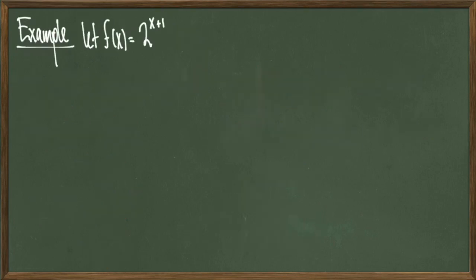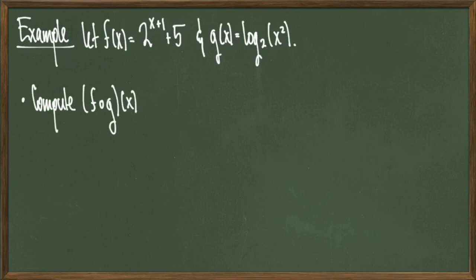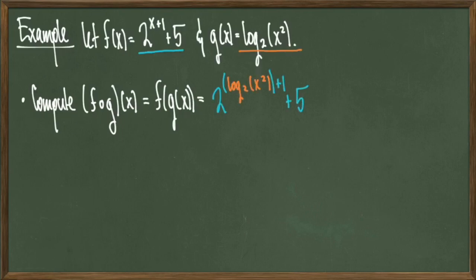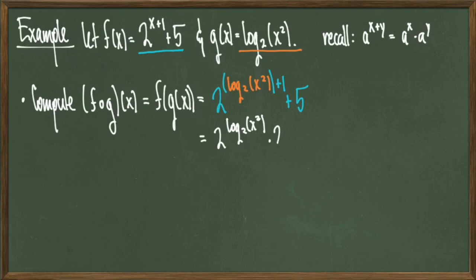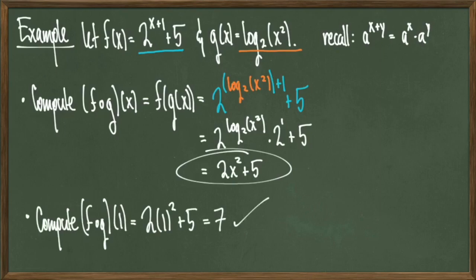For our next example, let f of x equal 2 to the x plus 1 plus 5, and let g of x equal log base 2 of x squared. We're going to compute the composition f composed with g of x, which by definition is f of g of x. Making these substitutions, I get 2 raised to the power log base 2 of x squared plus 1, all plus 5. Recalling that a to the x plus y expands into a to the x times a to the y, the sum in the exponent splits into 2 raised to log base 2 of x squared times 2 to the 1, all plus 5. The inverse rule applies, and this simplifies to 2 times x squared plus 5. I can also evaluate the composition at a number, so f composed with g of 1 simplifies down to 7, and we're done. Thank you so much.